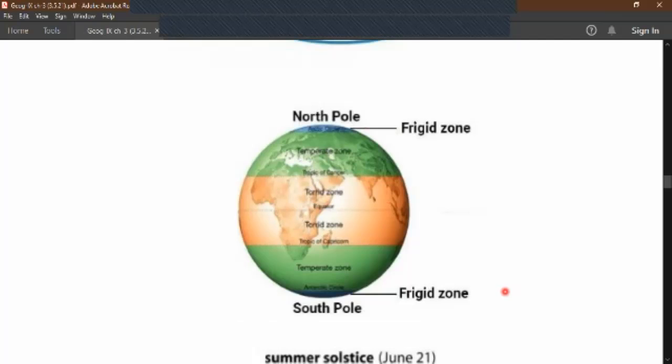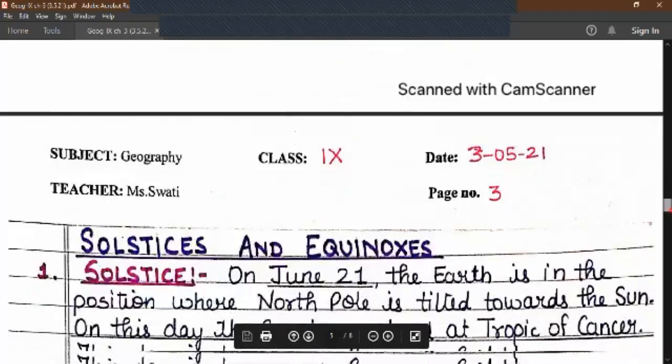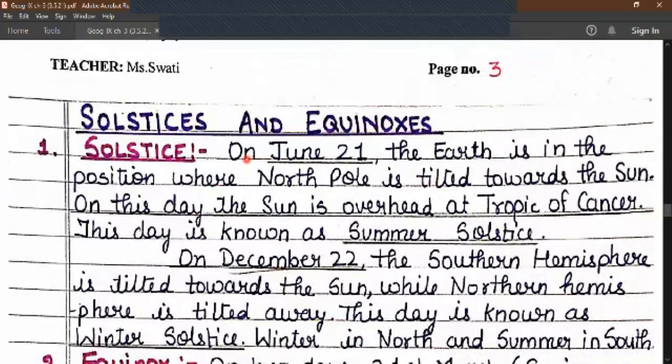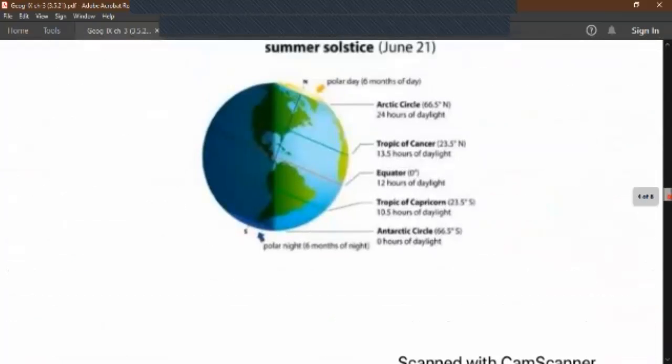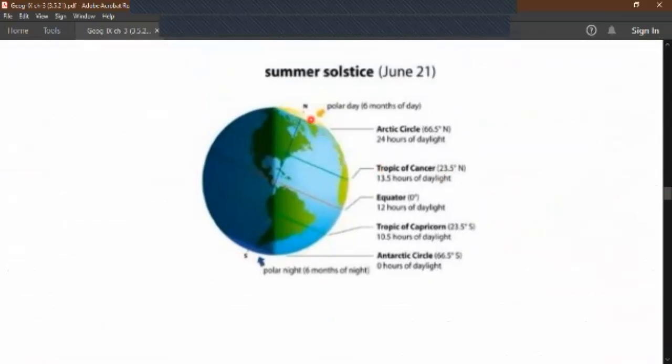Now let us discuss about solstice and equinoxes. On June 21st the earth is in the position where north pole is tilted towards the sun. So here it is June 21st summer solstice. The earth is tilted, the northern hemisphere is tilted towards the sun. On this day the sun is overhead at the Tropic of Cancer and this day is known as summer solstice.